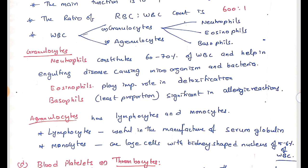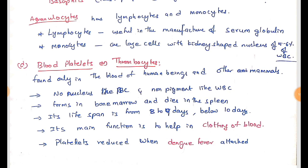Blood platelets are called thrombocytes. They are found only in the blood of human beings and some other mammals. They have no nucleus like RBCs and are non-pigmented like WBCs, so blood platelets combine both characteristics. They form in bone marrow and die in the spleen. Their lifespan is 8 to 9 days. Their main function is to help in the clotting of blood. When someone is attacked by dengue fever, the count of blood platelets drastically decreases, which is very dangerous.